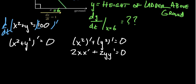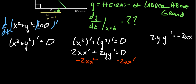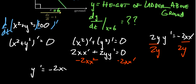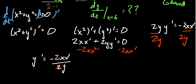We're trying to figure out what Y prime is. Solving for Y prime, we subtract 2X times X prime from both sides, giving us 2Y times Y prime equals negative 2X times X prime. Dividing both sides by 2Y, we've solved for Y prime: Y prime equals negative 2X times X prime over 2Y. Simplifying, the 2's cancel, so Y prime equals negative X times X prime over Y.